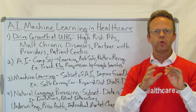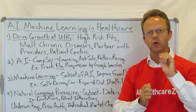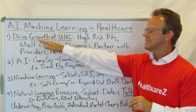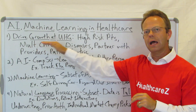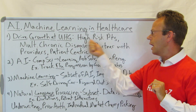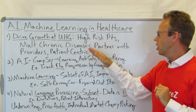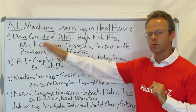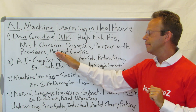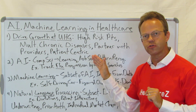I was reading the annual report for UnitedHealth Group and I was struck by this topic. In that report, which I will leave a link to in the show notes, it said that they were going to drive growth at UnitedHealth Group through AI and machine learning applied to high-risk patients, patients with multiple chronic diseases, to partner with providers — doctors and hospitals — and make care more patient-centric.